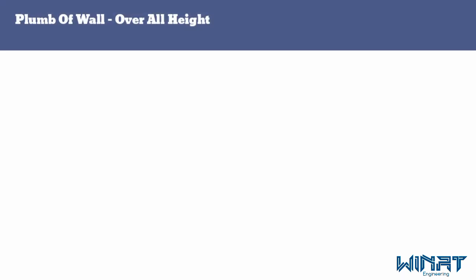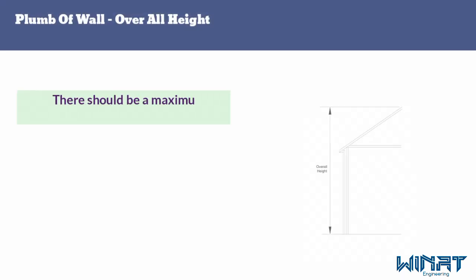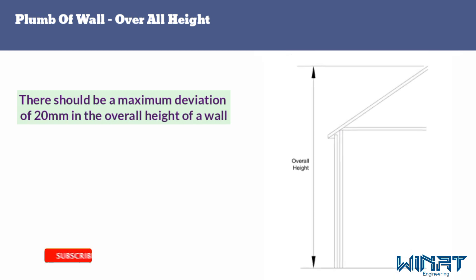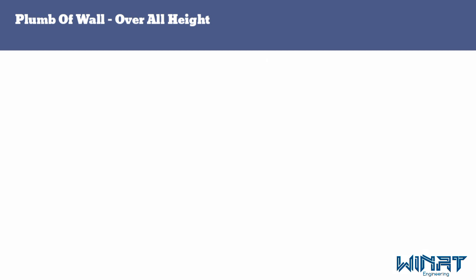The next tolerance is plumb of wall for overall height. There should be a maximum deviation of 20 millimeters in the overall height of a wall.